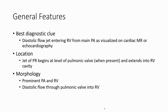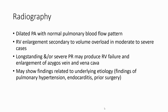The location of pulmonary regurgitation begins at the level of the pulmonary valve, arriving in the right ventricular cavity from the pulmonary artery, flowing past the closed pulmonary valve into the right ventricle. On imaging, we look for dilated pulmonary artery with normal pulmonary blood flow pattern. Right ventricle enlargement and volume overload occur in moderate to severe cases. Non-stenotic or severe pulmonary regurgitation may produce right ventricular failure and enlargement. Major findings relate to underlying etiology and pulmonary hypertension.